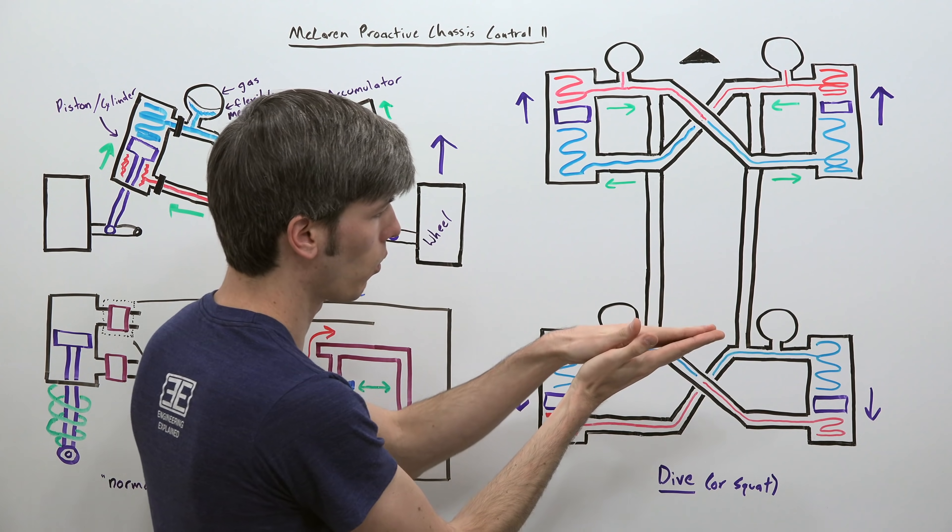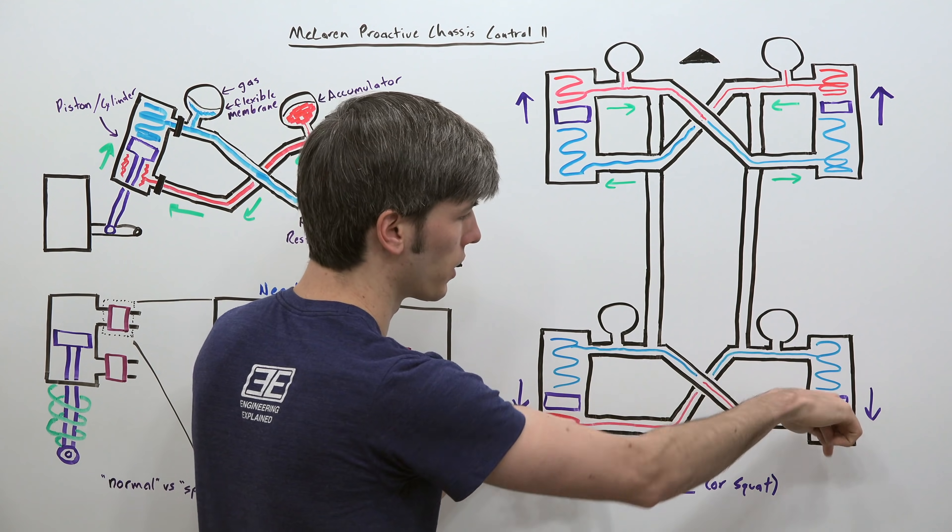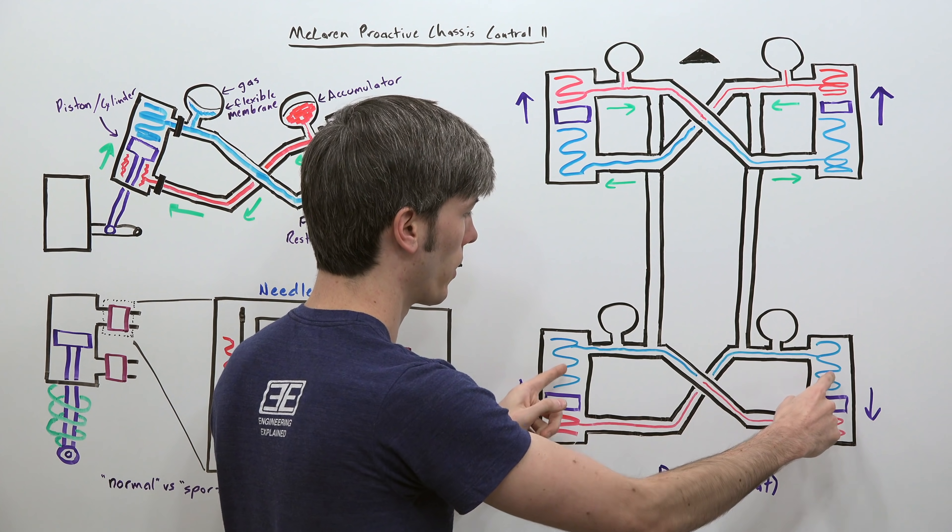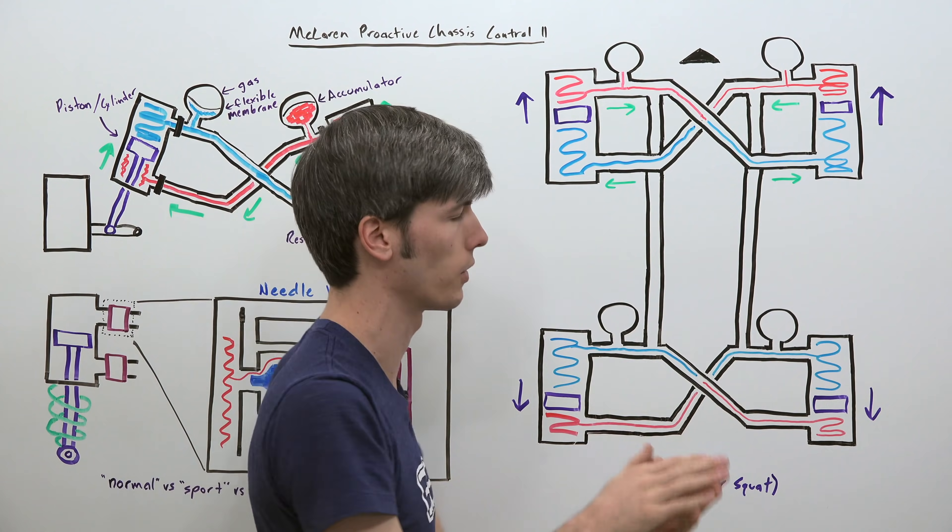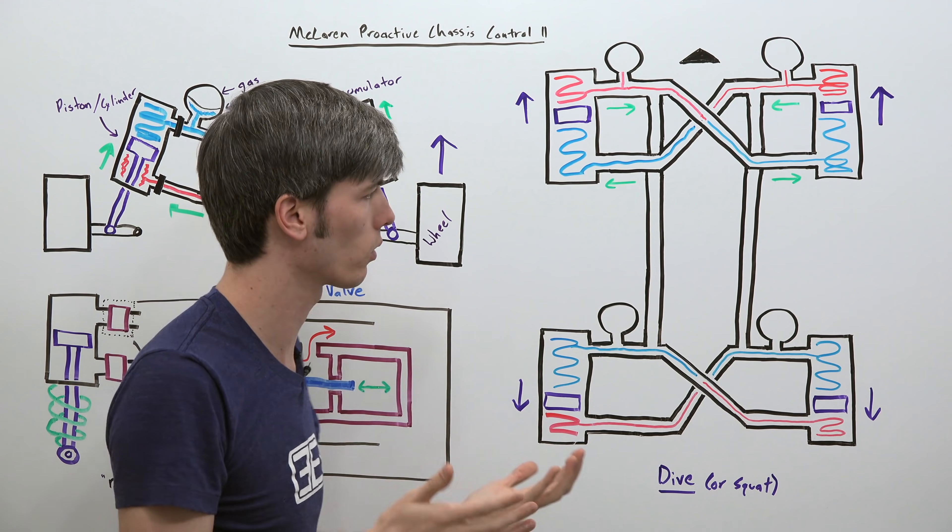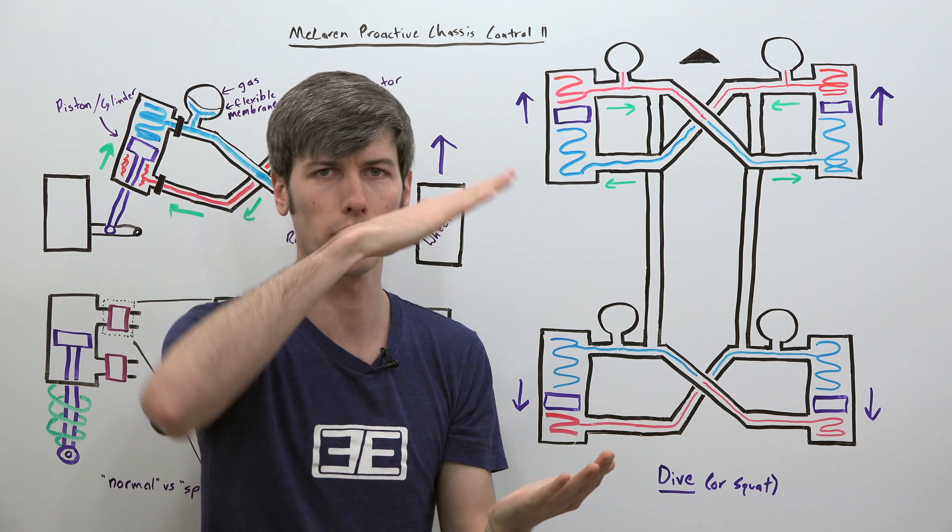It has access to low pressure areas that it can travel to and then here where that wheel wants to move away from the car, so pushing down, that high pressure area once again has a low pressure area to travel to. So you're allowing for that movement, you're allowing for that articulation.